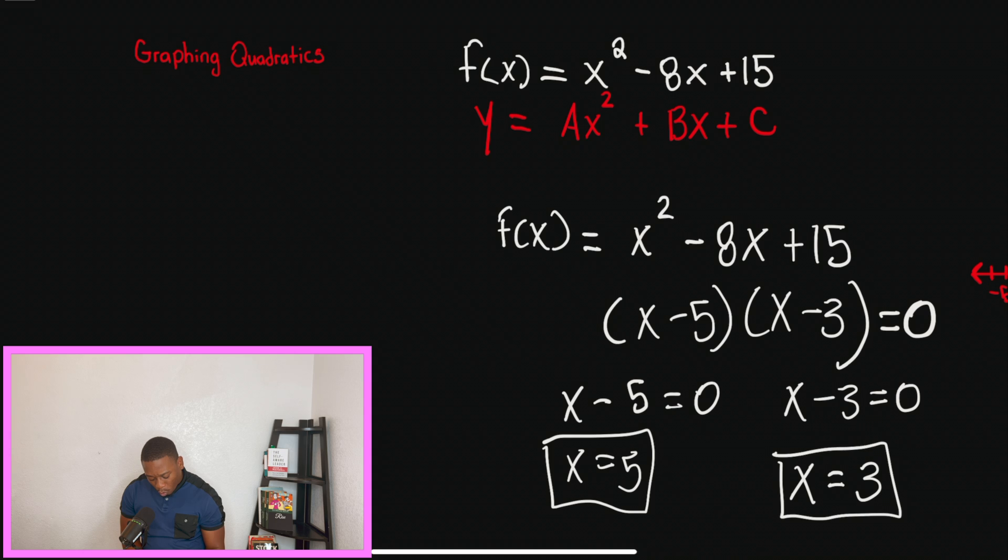And we're going to do the same thing with x minus 3 equals 0. So now we know where we're going to plot our x-intercepts. That's the first step.